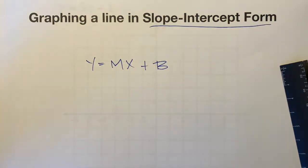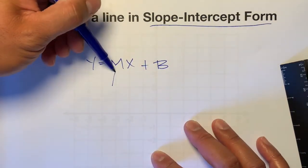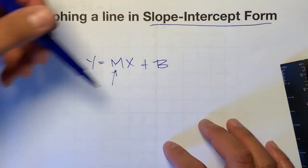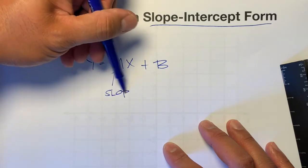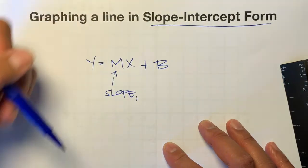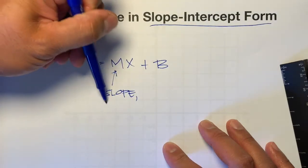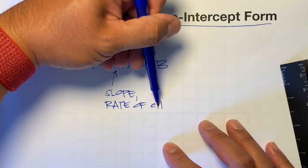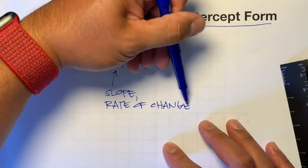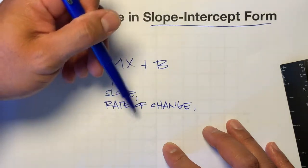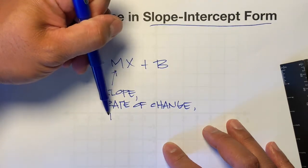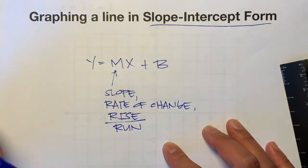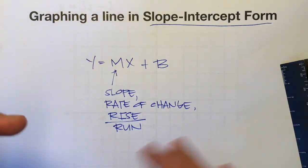We'll start with the M. M represents the slope — also referred to as the rate of change, or how the line changes. If your teacher already taught you slope, it is the rise over the run — how it rises while it's running.